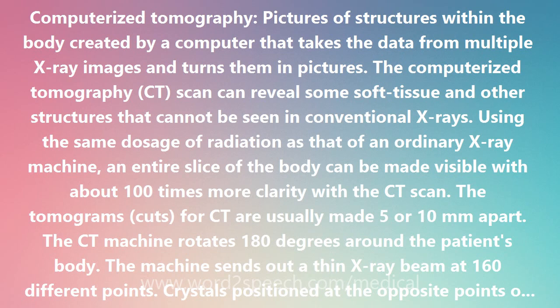The Computerized Tomography, CT, scan can reveal some soft tissue and other structures that cannot be seen in conventional X-rays. Using the same dosage of radiation as that of an ordinary X-ray machine, an entire slice of the body can be made visible with about 100 times more clarity with the CT scan.